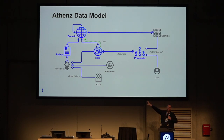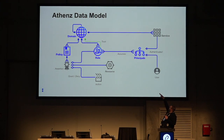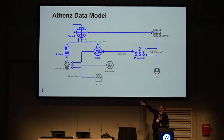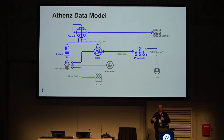Athens has a concept of domains — a domain is like a namespace container. I know there's a lot of overlap with Keystone here; it's unfortunate how it played out. A domain is just a named thing. Under a domain there can be a number of services listed. You have a principal, which is either a user or a service. You have a role, which is a list of principals — so a role is a list of users, a list of services, or a mix of both. You then have policy, which asserts an action on a resource — the assertion is like 'grant' or 'deny.'